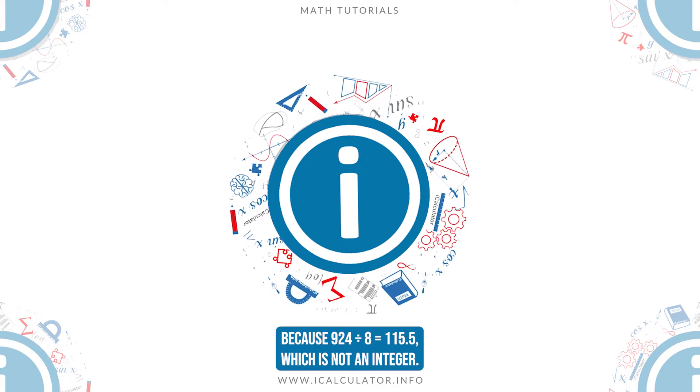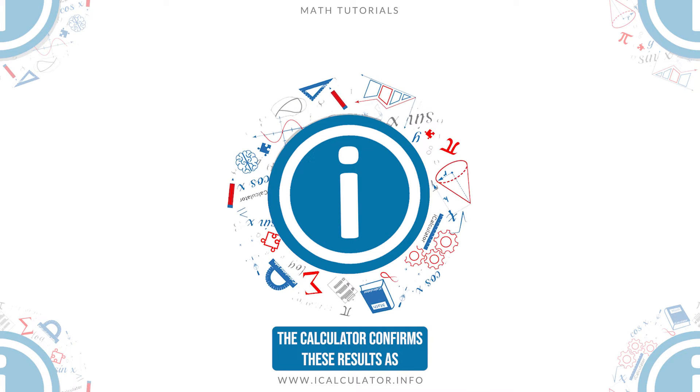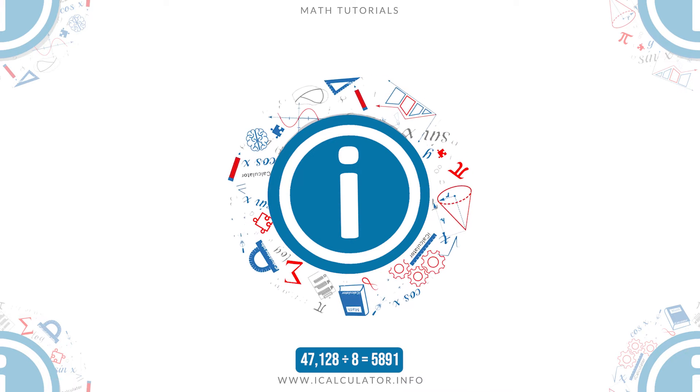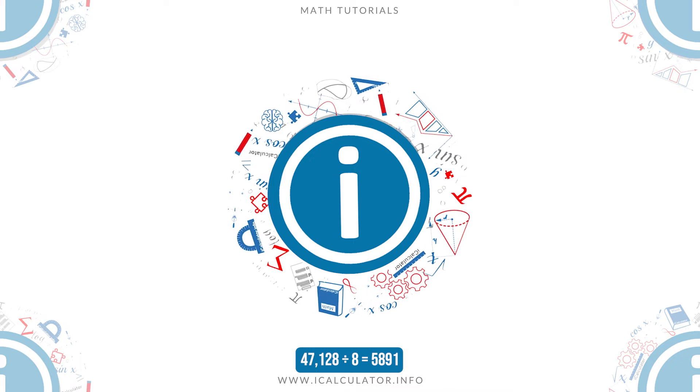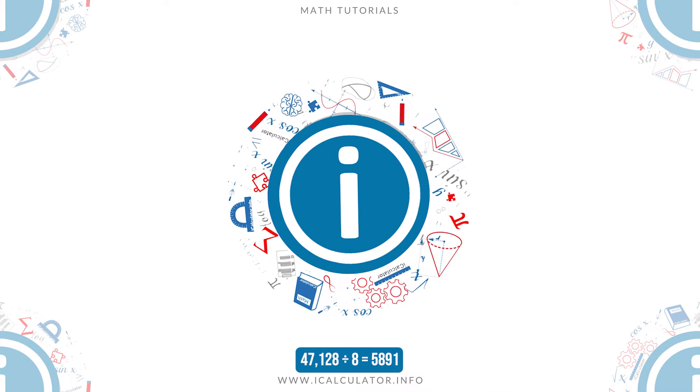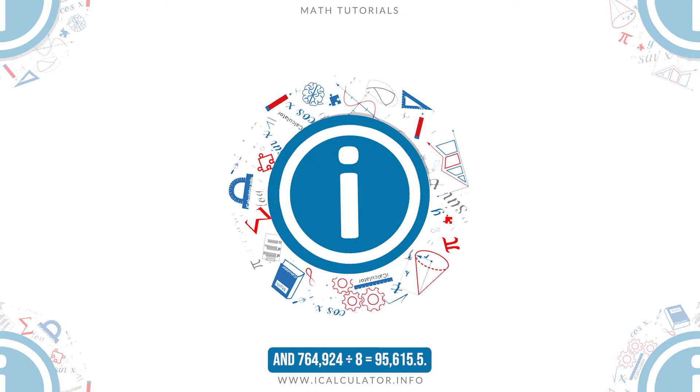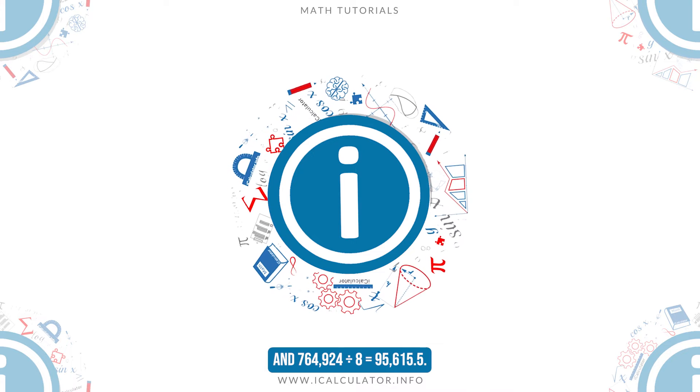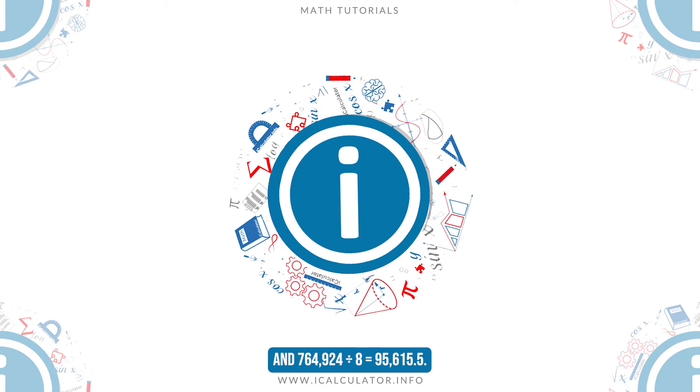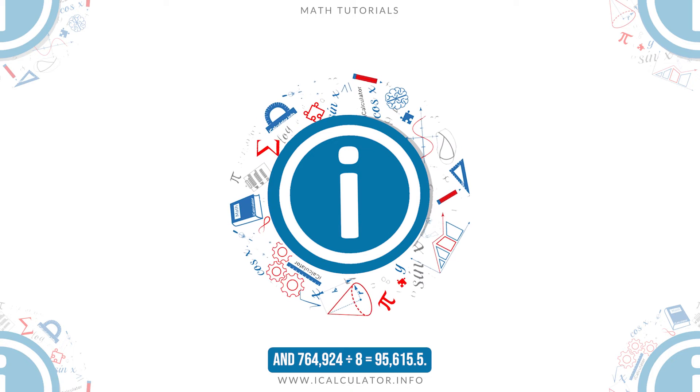which is not an integer. The calculator confirms these results as 47,128 divided by 8 is equal to 5,891, and 764,924 divided by 8 is equal to 95,615.5.